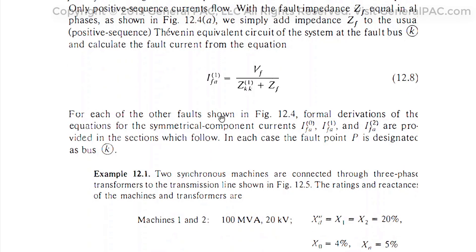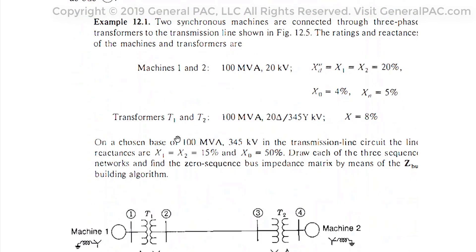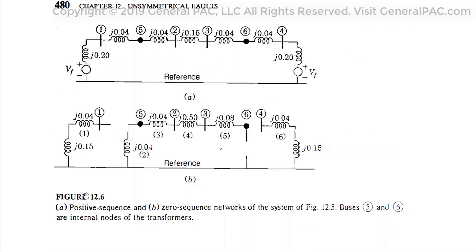For each of the other fault types as shown in figure 12.4, which was the previous figure, the former derivation of this equation shows that symmetrical component currents — negative sequence, positive sequence, and zero sequence — are provided in the section which follows. In each case, the fault point P is designated at bus K, indicating where the fault current is located.